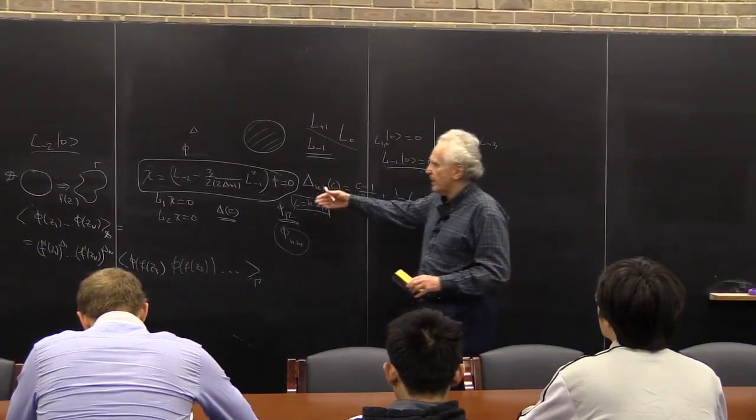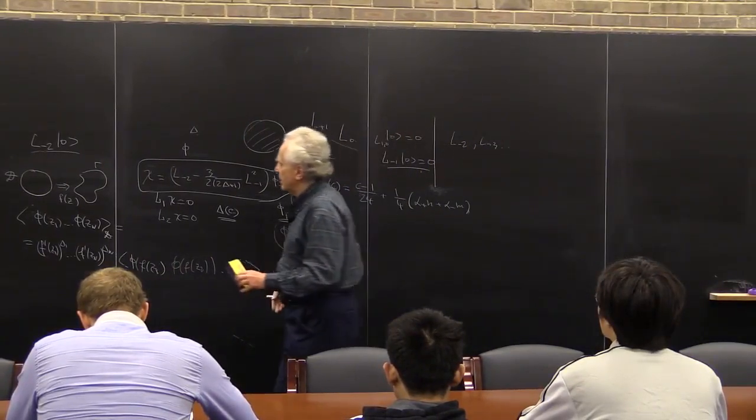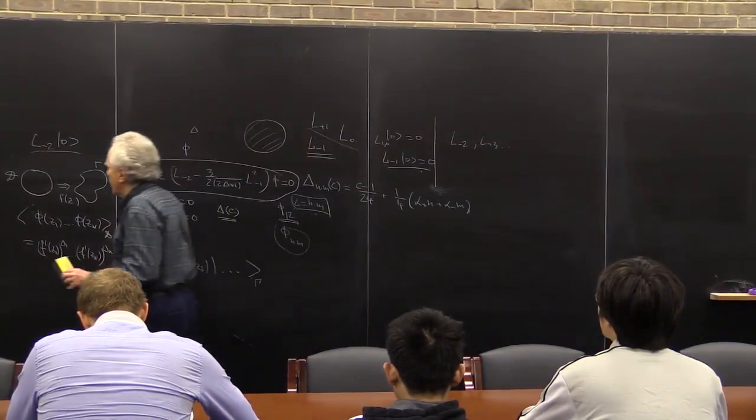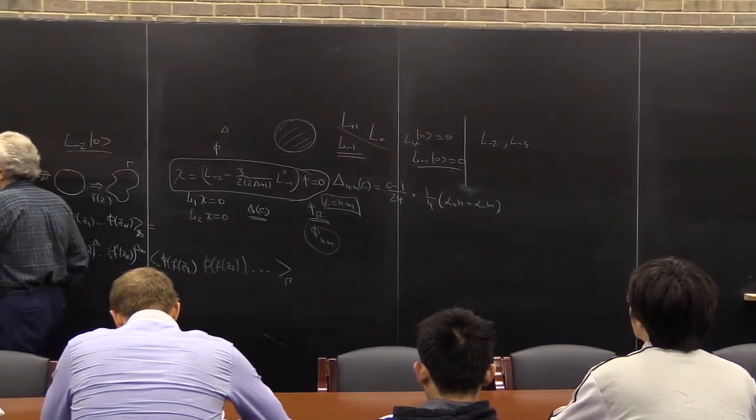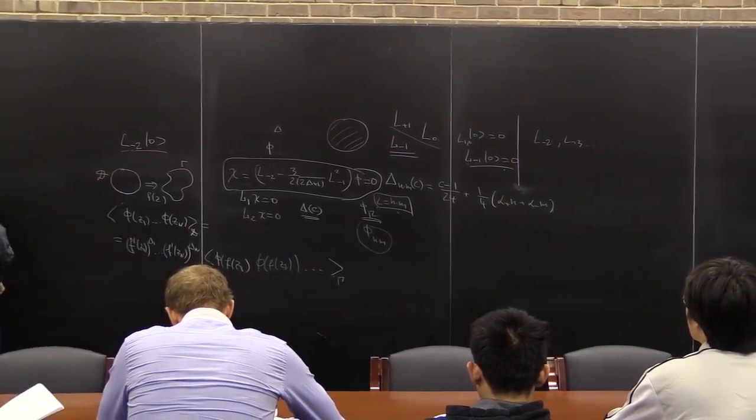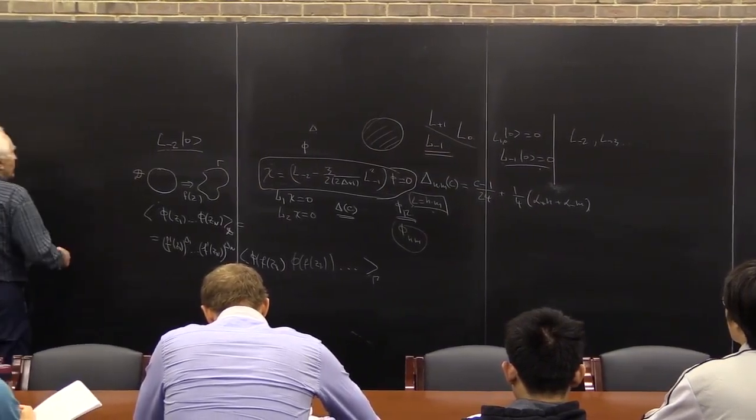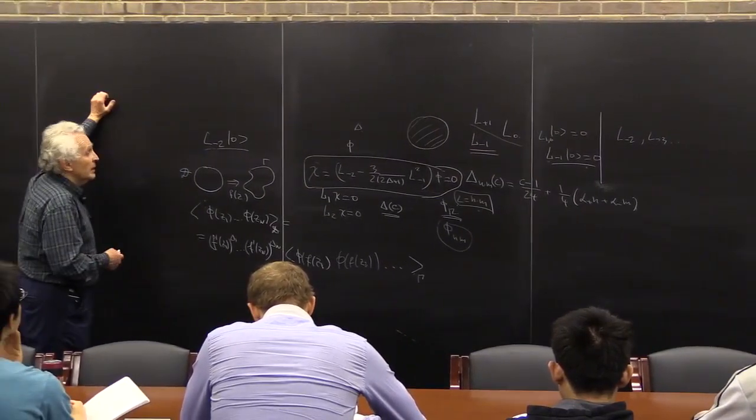To finish: higher Virasoro generators generate the change of the domain. Null vectors are such combinations of secondary operators which, although they change the domain, don't change the correlation function. That's something I suggest you think about — but it's a digression from what I'm planning to talk about.